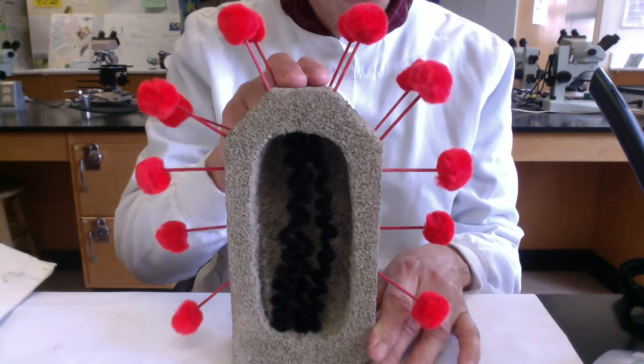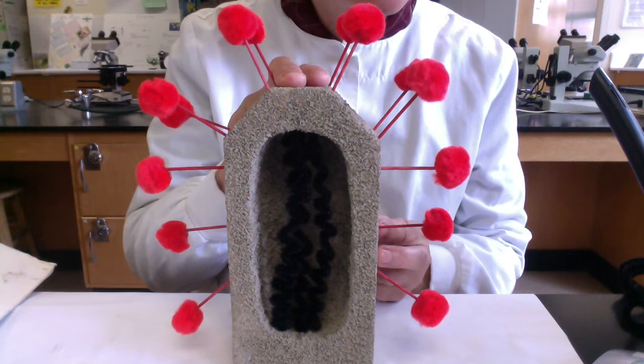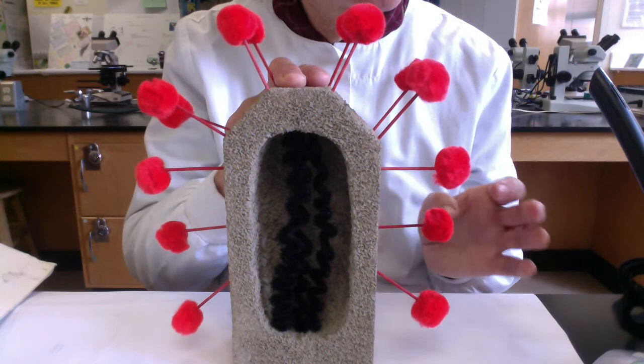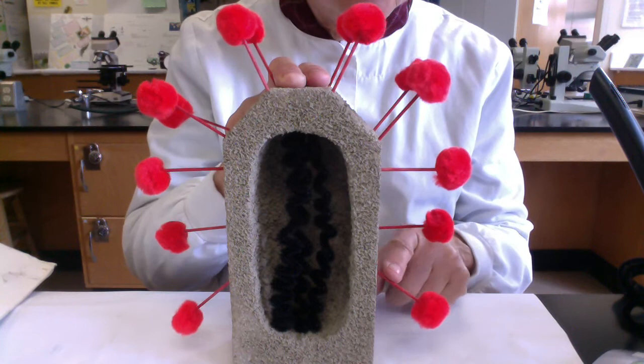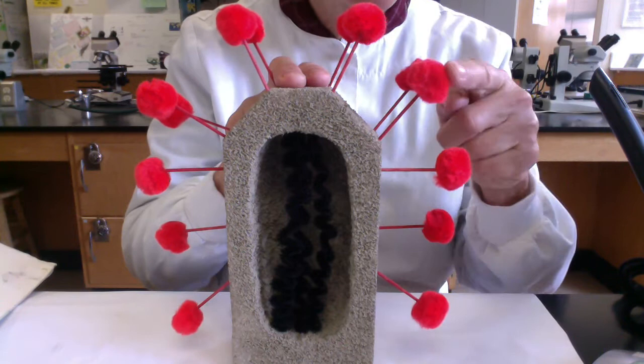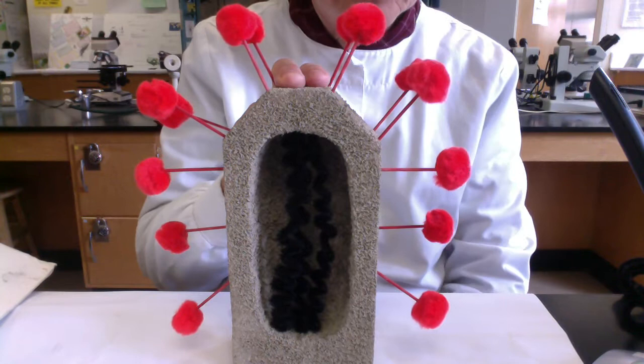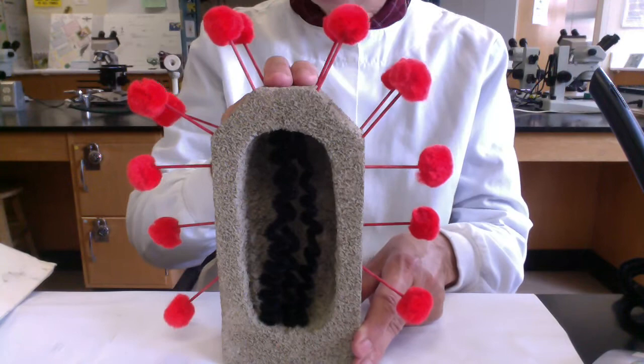But then folks another really important function of the capsid is that it will also bear the protein adhesins. And the protein adhesins you'll recall are the surface structures the virus uses to attach to the host cell, the cell that it's going to invade. So here in this cool model you guys we have, here's our viral adhesins. So these would be viral proteins and then the little pom-poms at the ends. Those are the specific proteins that would bind to complementary surface receptors on the surface of the host cell.